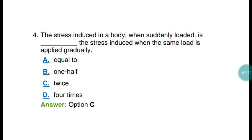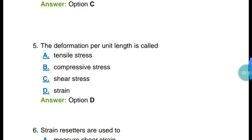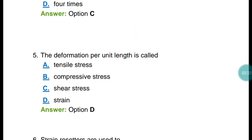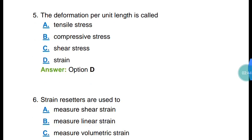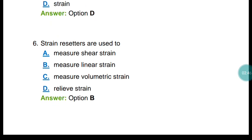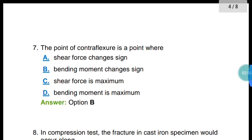Question number five: Deformation per unit length is called strain. Strain means change in length divided by original length. Question number six: Strain gauges are used to measure linear strain.